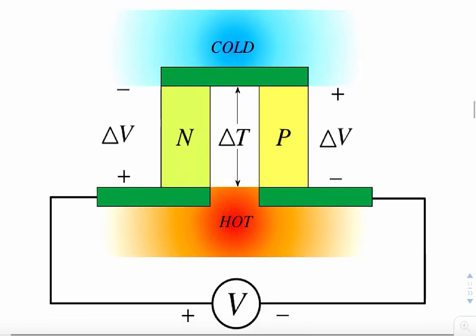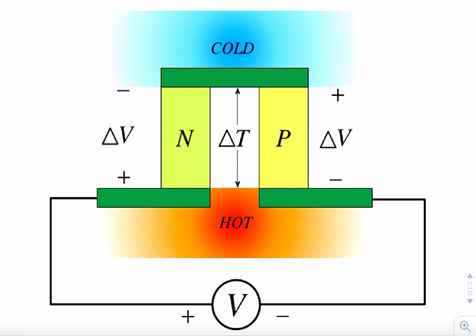Using one N-type and one P-type semiconductor, I am now able to add the Seebeck voltages generated in these legs. If I put a voltmeter, I can actually measure the voltage generated by this device. I have a voltage generator converting this delta T to a voltage. What I'm really doing is taking the heat flowing through this device and converting that to a voltage. But I'm not limited to just two legs — why not use more legs?